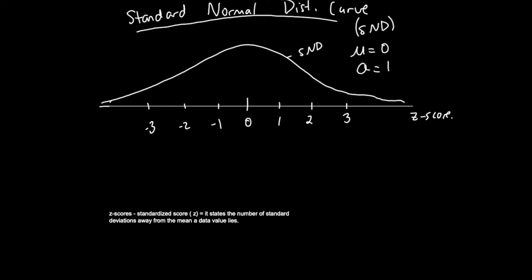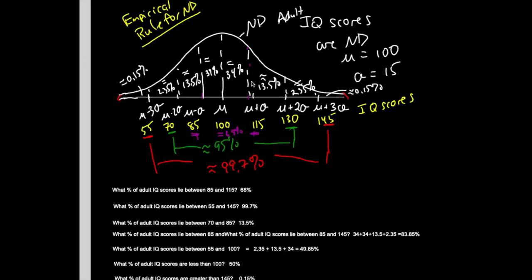If a data value has a z-score of positive 1, that data value is one standard deviation above the mean. Looking at the IQ score curve, what would I expect the z-score to be for an IQ score of 130? We know that it's two standard deviations above the mean, so the z-score would be positive 2. For an IQ score of 55 — three standard deviations below the mean — the z-score would be negative 3.